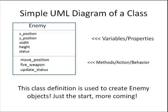Here is what our enemy class and object will contain. This is in what is called simple UML — Universal Modeling Language. At the top you will see the name of our class: Enemy. In the middle box you will see the variables or properties of the class: the X position, Y position, width, and status variables.